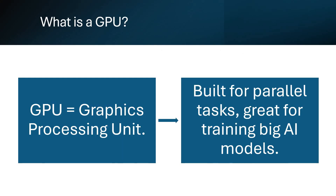We will start with GPUs. GPUs have thousands of cores, perfect for AI workloads like training LLMs. NVIDIA and AMD dominate in this sector.